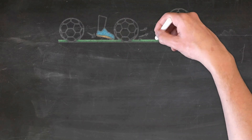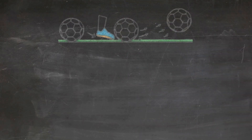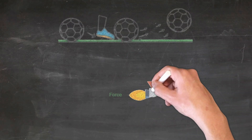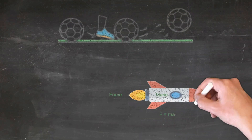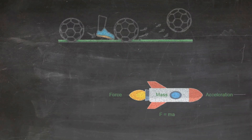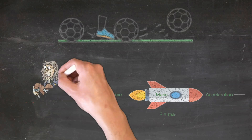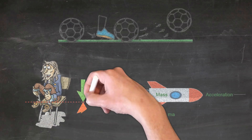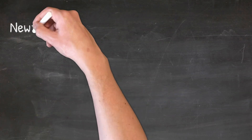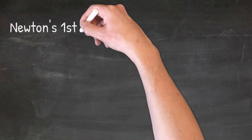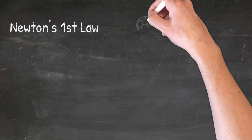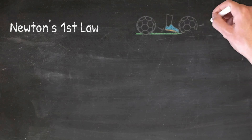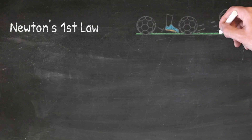Newton's three laws of motion are very important to understand in both physics and physical science, as they are the basis of understanding the motion of objects. Newton's first law of motion states that an object at rest will stay at rest, and an object in motion will stay in motion unless acted upon by an outside force.